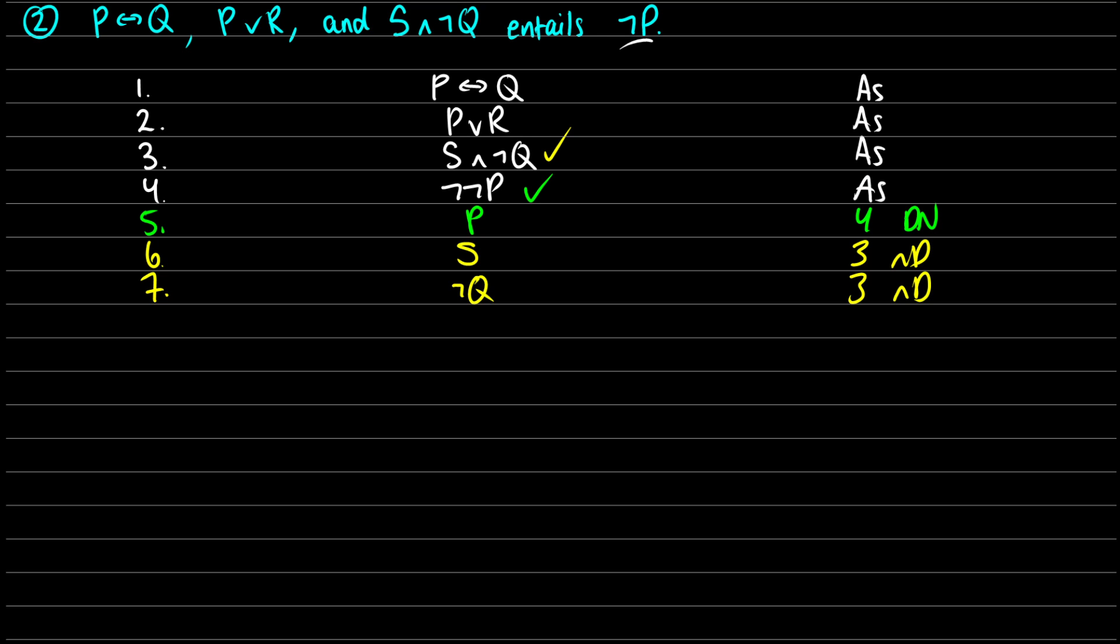So coming from three, if S∧¬Q is true, then S is going to be true and ¬Q is going to be true. So that's line 3, and that's ∧ decomposition. So at this point, we can do P∨R, or we can do P↔Q. I'm going to do P↔Q, because I have a P here and I have a Q here. I don't really have an R anywhere, so branching that out might not help too much. So let's do P↔Q and see if anything nice happens. So this is going to give us branching paths.